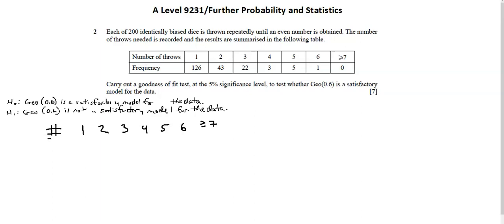I want to calculate my expectation for each of these and I'm using the geometric distribution. So we're working with p times 1 minus p to the power of r minus 1. And the r is the number of throws.